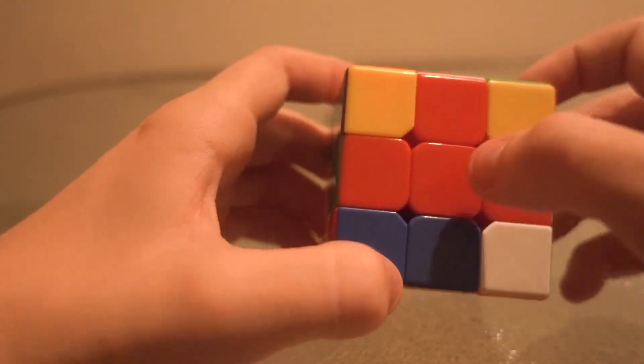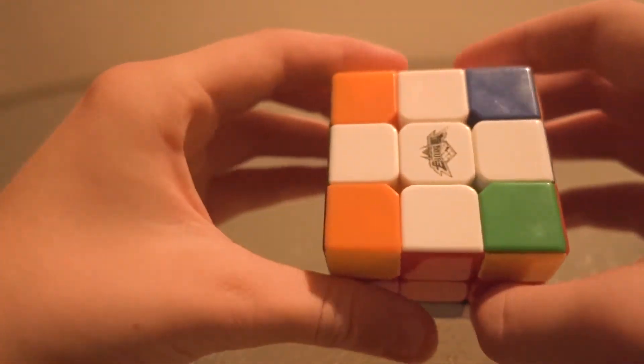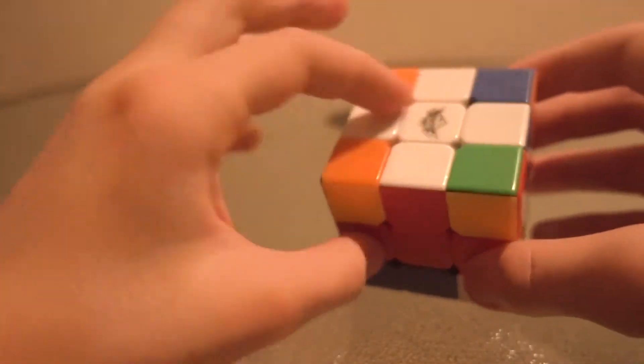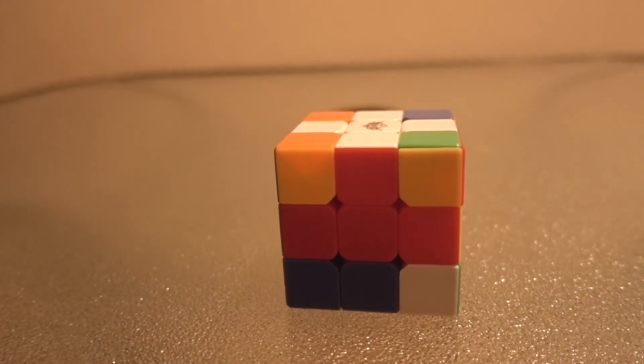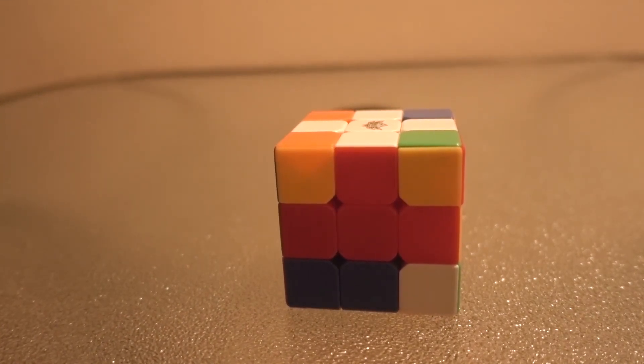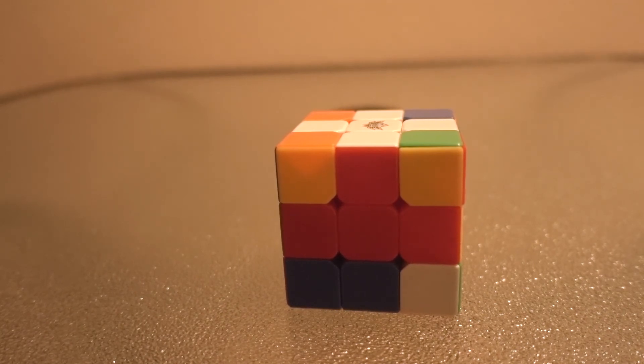I know it doesn't look red on camera very much, but it is red. So that is how to solve the white cross, step one of the Rubik's Cube. Thanks for watching, and go watch my second video on how to solve the white corners.